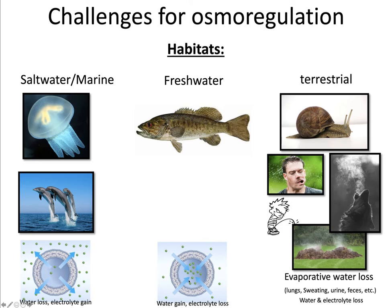If you're in a terrestrial environment, the big thing animals are dealing with is evaporative water loss. This could be water loss through the skin, through sweat, through breathing, through your lungs, and through urine and feces. You may have heard the expression 'a hot steaming pile of dung' — that steam rising off it is water that's been lost from the organism's body. A wolf howling — that's water vapor being lost from that animal's lungs. Sweating — that's water being lost from your body. So lungs, sweating, urine, and feces all result in water and electrolyte loss, and that's what terrestrial animals have to deal with in terms of osmoregulation.